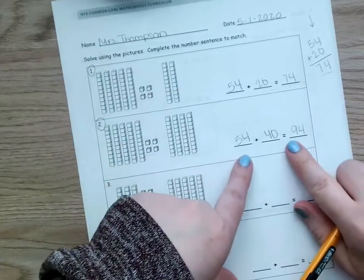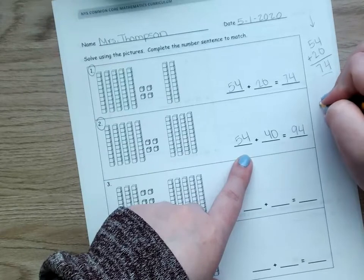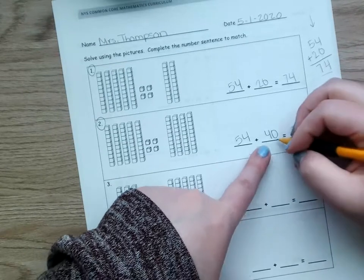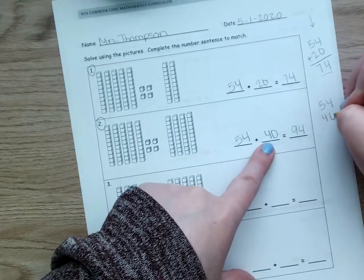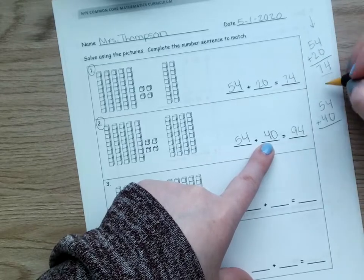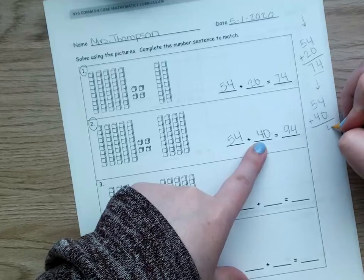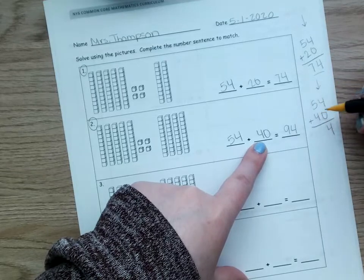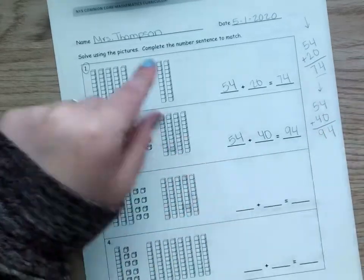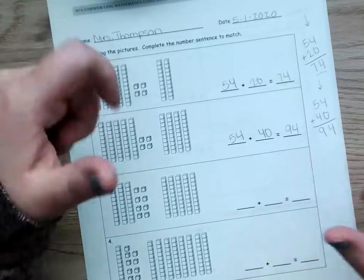Okay? How I would line these up, I would start with 54 and 40. Again, we start with the ones. 4 plus 0 is 4. 5 plus 4 is 9. 94. We're good.